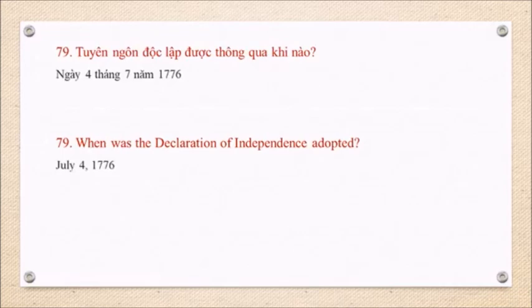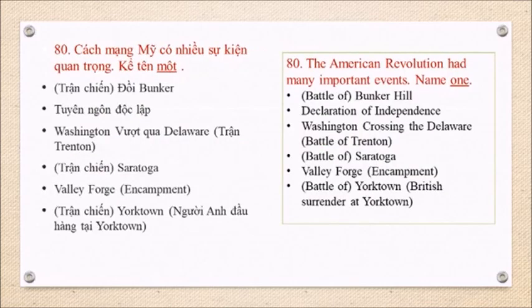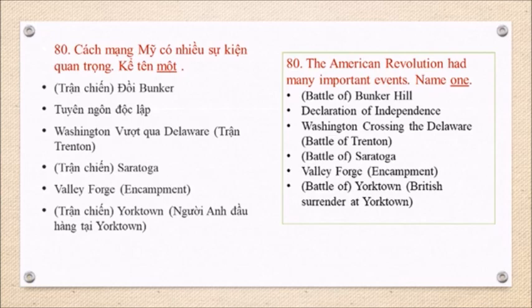Question 79: When was the Declaration of Independence adopted? July 4, 1776. Question 80: The American Revolution had many important events. Name one. Battle of Bunker Hill. Declaration of Independence. Washington crossing the Delaware. Battle of Trenton. Battle of Saratoga. Valley Forge Encampment. Battle of Yorktown. British Surrender at Yorktown.